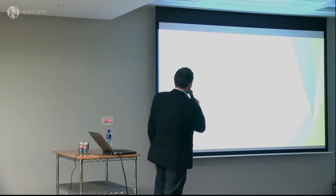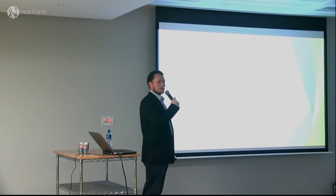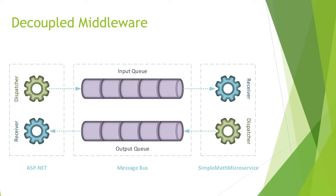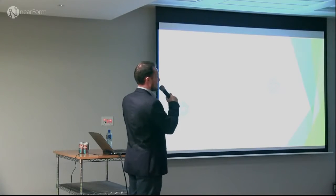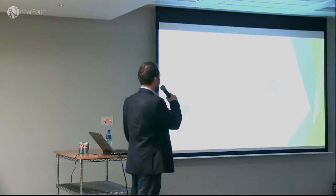Beginning with design patterns: the quintessential design pattern in microservice architecture is the decoupled middleware pattern. In its simplest form, within the context of .NET, we have an ASP.NET application which consists of a message dispatcher. The message dispatcher dispatches a message to an input queue based on a microservice — I've named this the Simple Math Microservice, which simply doubles any given number.